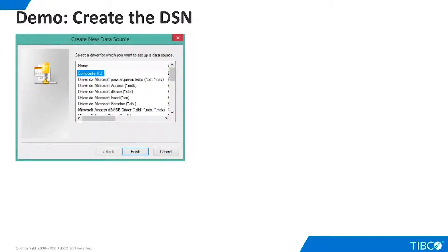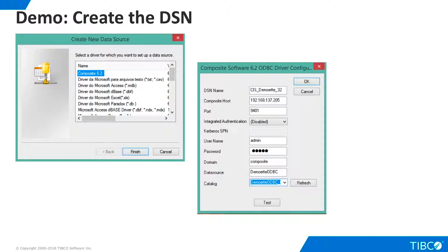Now we are ready to create the DSN. Click the System DSN tab on the ODBC administration window, select Add, and the Create New Data Source Wizard appears. The first step is to select the composite driver. Next, we configure the driver. Give it any DSN name you prefer, but a best practice is to end the name with 32 or 64 in order to avoid any confusion about the bitness of the DSN. For composite host, enter the host name or IP address of the TDV server. The default TDV port for ODBC is 9401.